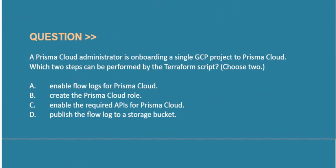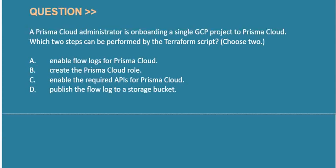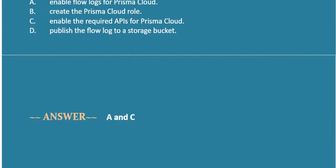Next question: A Prisma Cloud administrator is onboarding a single GCP project to Prisma Cloud. Which two steps can be performed by the Terraform script? Option A: enable flow logs for Prisma Cloud. Option B: create the Prisma Cloud role. Option C: enable the required APIs for Prisma Cloud. Option D: publish the flow log to a storage bucket. Correct answer is Option A and Option C.